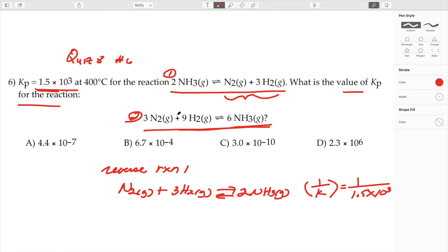If I multiply the coefficients of this equation by 3 then I will end up with this equation and that's 9 hydrogens and 6 moles of ammonia.